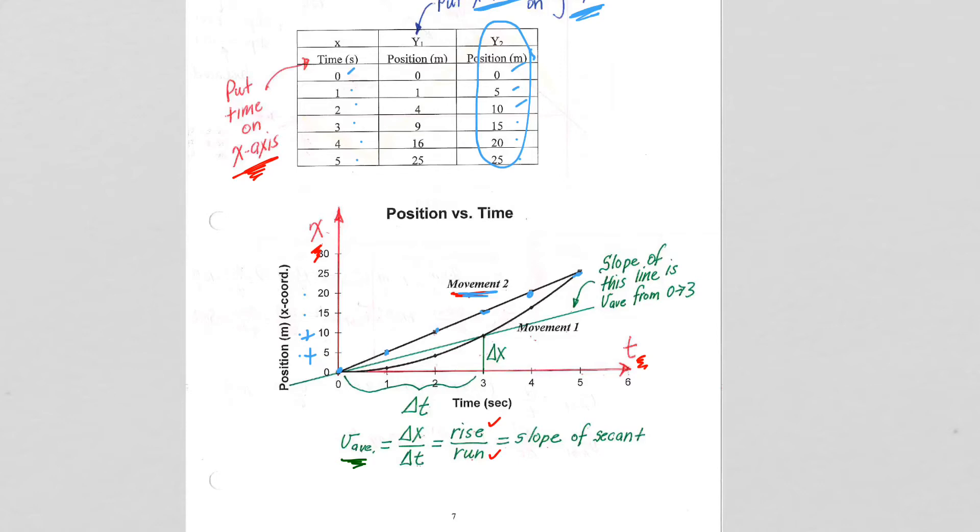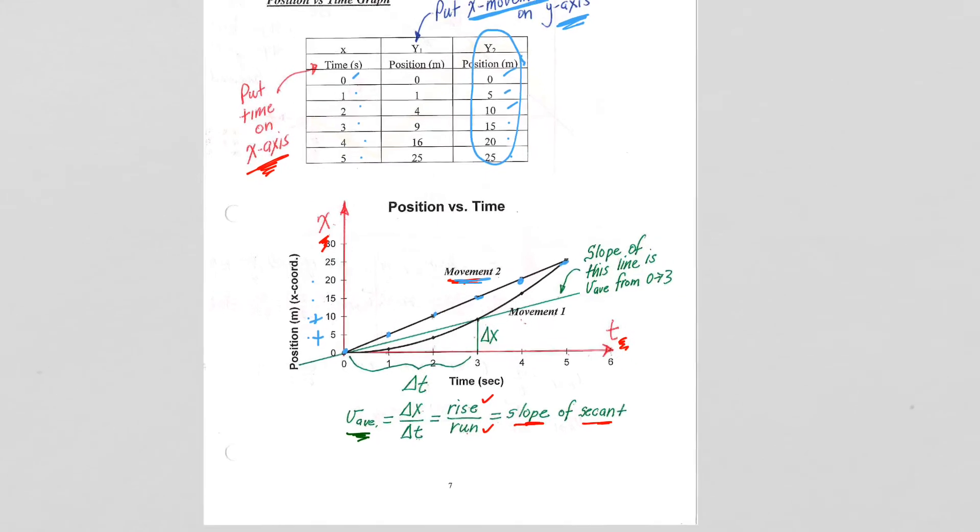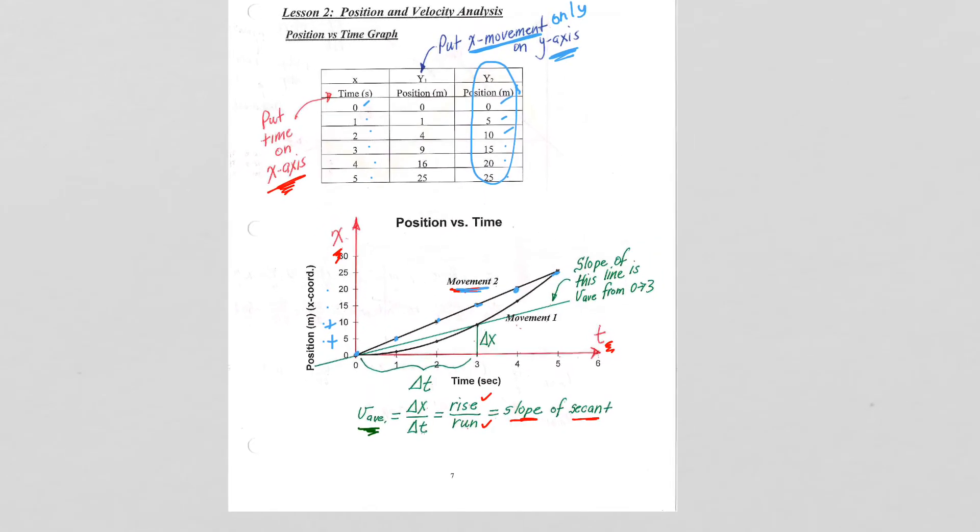When we look at the x-axis and we've plotted time on it, when we look at delta t, we get a run. From math, we know that represents the slope of our line, which is, in this case, a secant because it intersects our function at two points. This is going to be really important for us in terms of understanding mathematical representations of positions versus time movements.